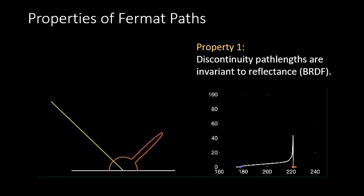We can prove that these Fermat paths and their lengths have a number of useful properties. First, Fermat paths are a function of only the geometry of the non-line-of-sight scene and not its reflectance. What this means is that the locations where a transient is discontinuous will remain the same, regardless of the BRDF of the non-line-of-sight object.